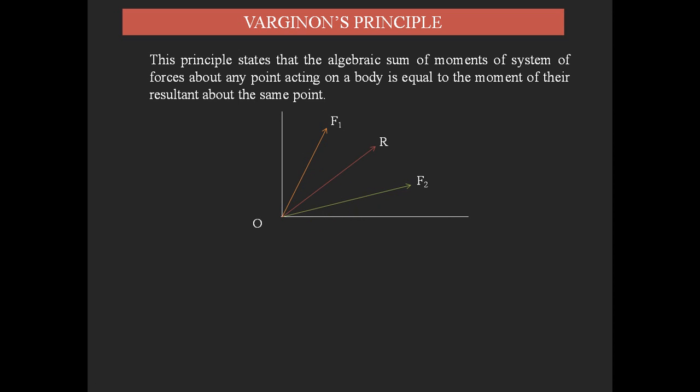The resultant can be determined using the Parallelogram Law of Forces, which we have already discussed in the previous video. Based on that formula, we can find the resultant force. The formula according to Varignon's Principle is: the moment due to the resultant force equals the moment due to force F1 plus the moment due to force F2.